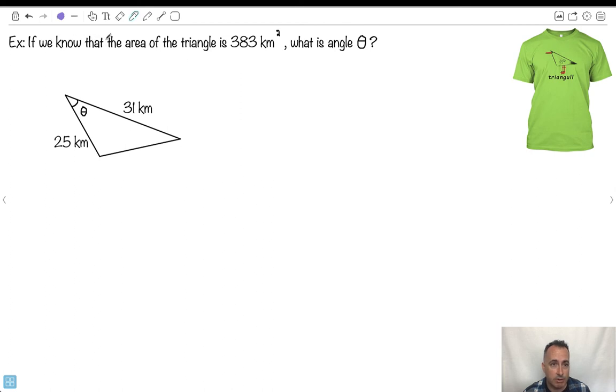We know that the area of the triangle is 383 kilometers squared. What is the angle theta? Now this is just me being a little bit funny. I found this t-shirt, this triangle, which I thought was really clever. So do you notice I tried to make the triangle here with the same shape as the triangle? I even put the angle up here just to try to make it look like eyes. Oh well.